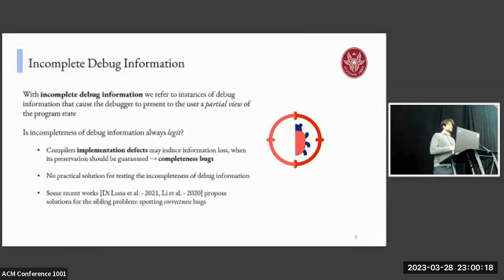Currently, there is no practical automated solution for finding such bugs in optimizing compiler tool chains. There have been some works that provided solutions for a sibling problem, which is correctness, but as we will see, we have some more obstacles to overcome.